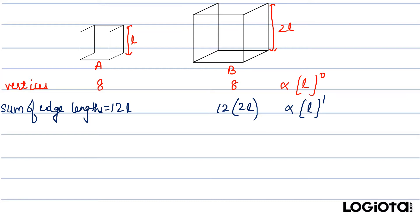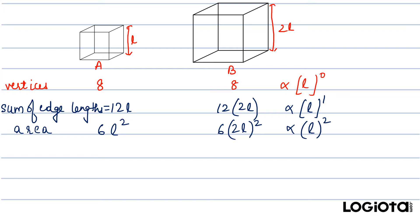Now let's see the surface area for the box. The formula is 6L squared. For the first box it will remain 6L squared, but for box B it will become 6 into (2L) squared. So the area is proportional to L squared — if we doubled the length, the area has become 4 times. For the volume, the formula is L cubed. Similarly for box B it will be (2L) cubed, so the volume is proportional to L raised to the power 3.